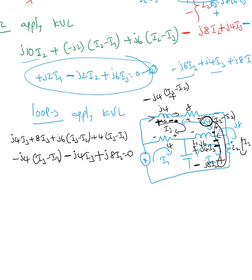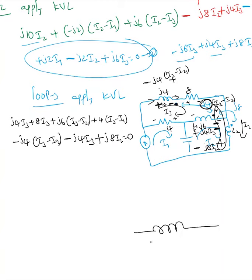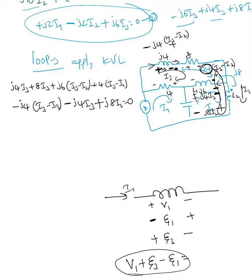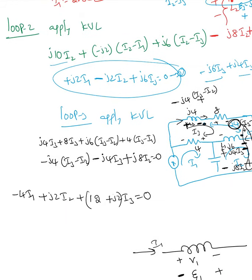To clarify adding and subtracting: say you have an inductor with self-induced voltage V1, mutual voltage E1 ending negative, and another mutual voltage E3. With that current flow direction, the total voltage drop is V1 + E3 − E1. That's how you add and subtract. Simplifying Loop 3 gives: −4·I1 + j2·I2 + (12 + j2)·I3 = 0. That is the Loop 3 equation.